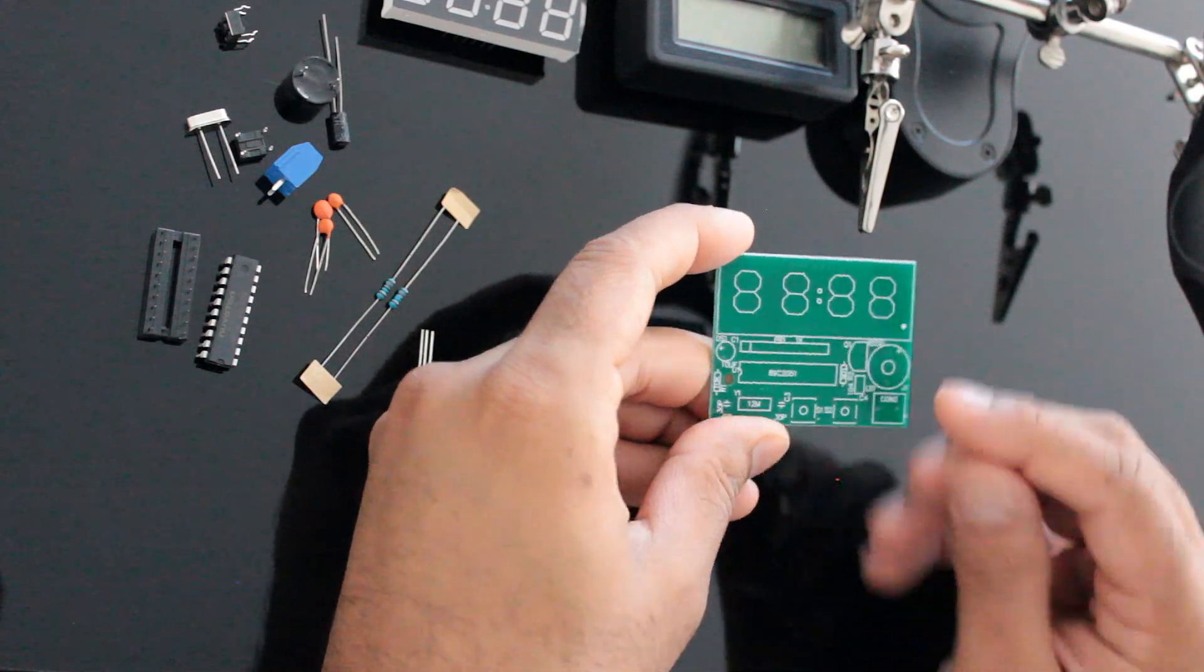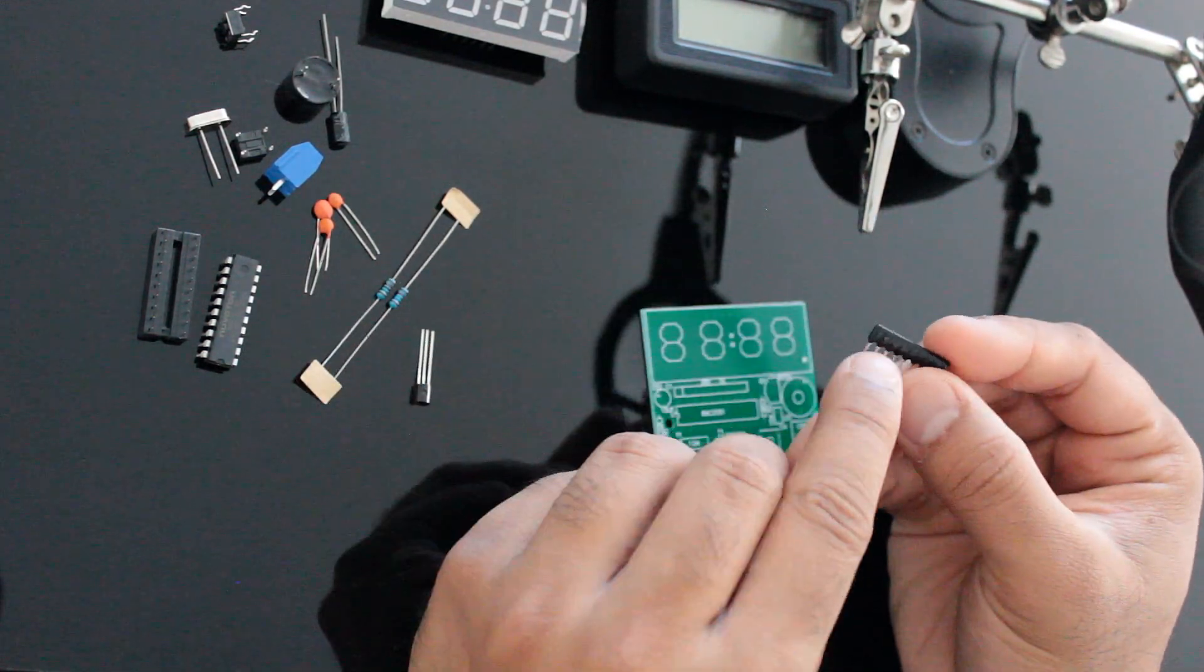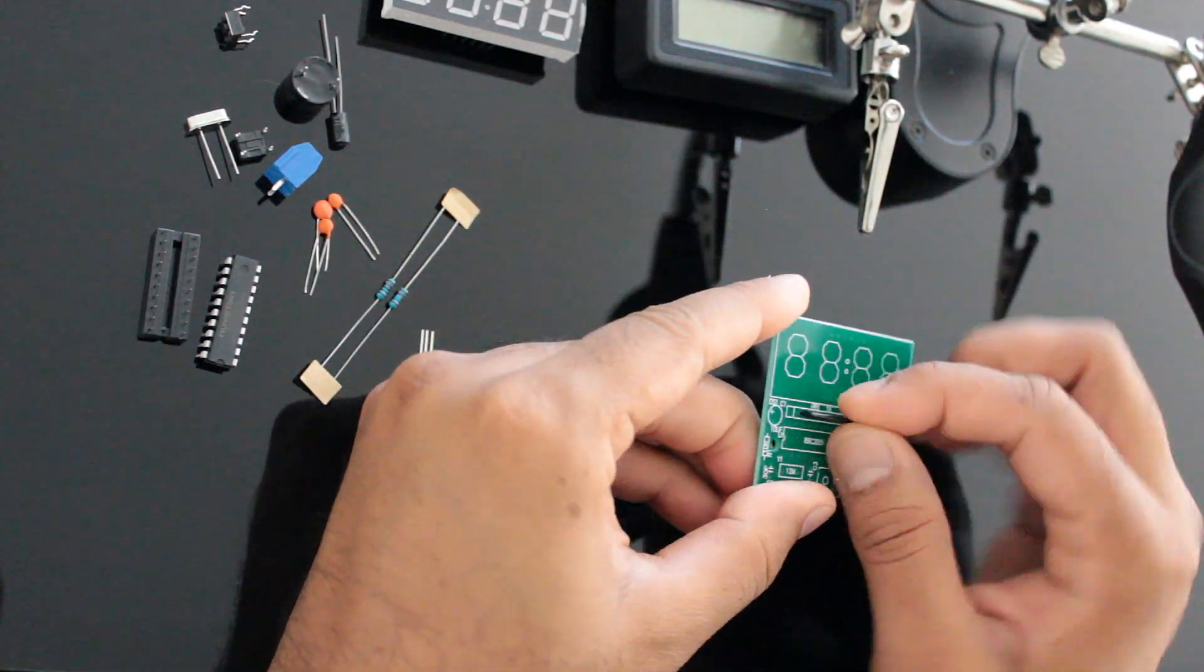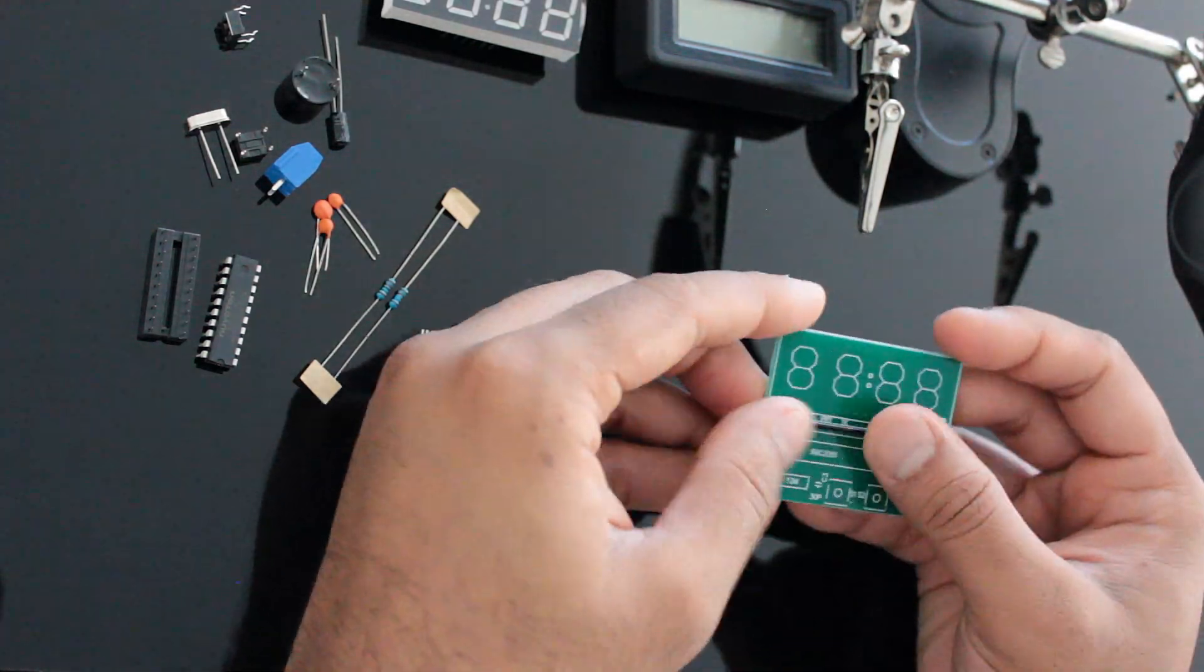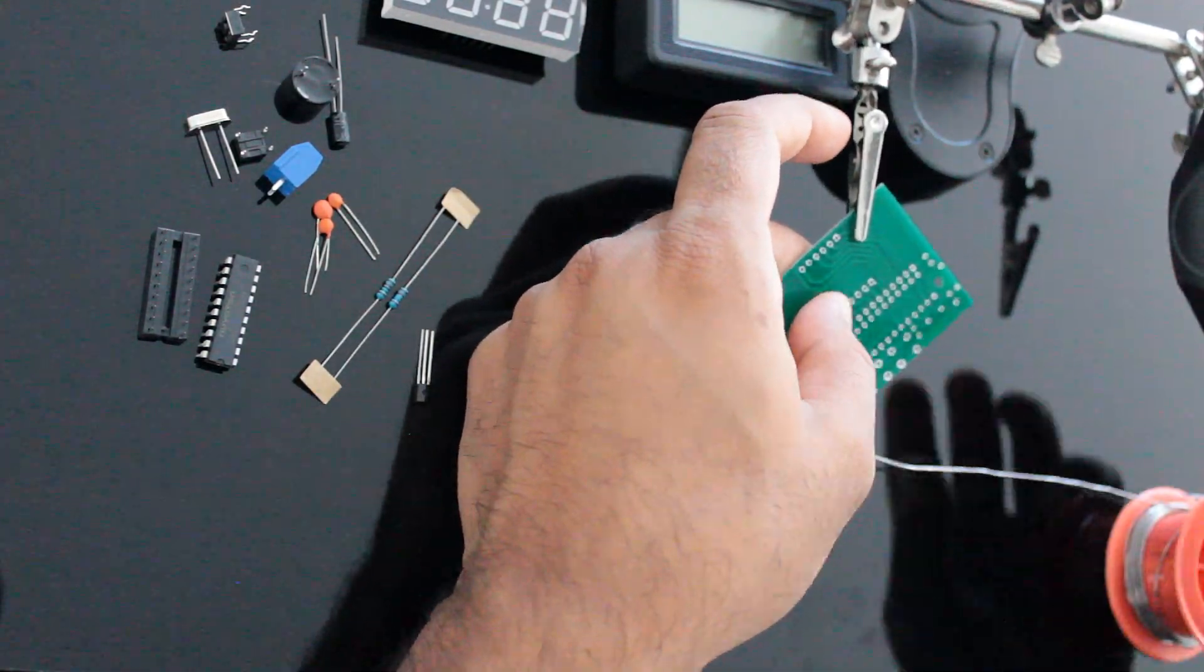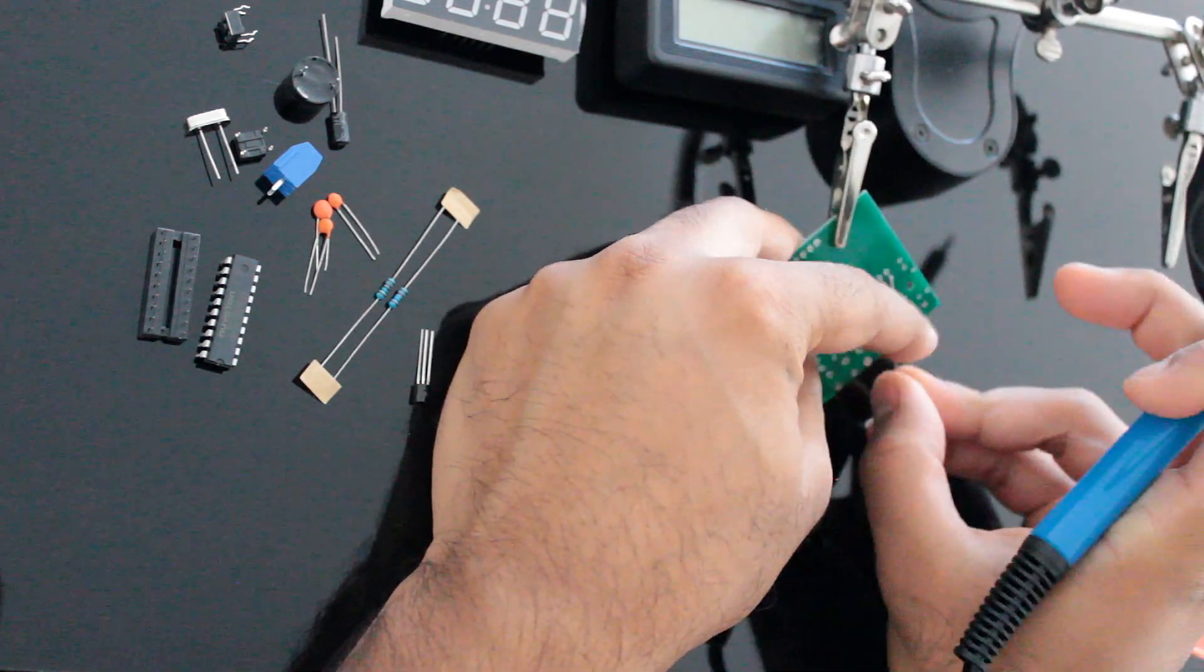The board is actually drawn out with all the shapes of the components on it. So even if you don't know what the components are, it's really easy to find the right place for it. I'm going to install the components from the top to the bottom so that I have easy access to all of them while soldering.